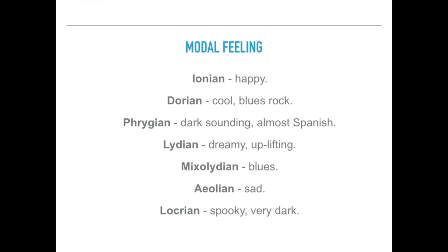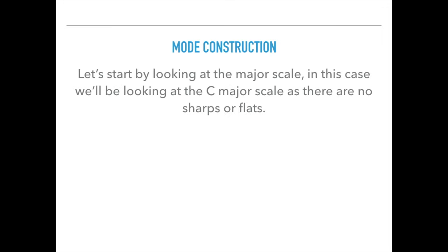All of these modes invoke a certain feeling. Ionian is quite happy. Dorian is very cool — it's quite blues and rocky. Phrygian is dark sounding, it's almost Spanish. Lydian is quite dreamy, uplifting, or even futuristic sounding. Mixolydian is used for blues. Aeolian is quite sad, so if you need a sad ballad write using that one. Locrian is quite spooky or very dark.